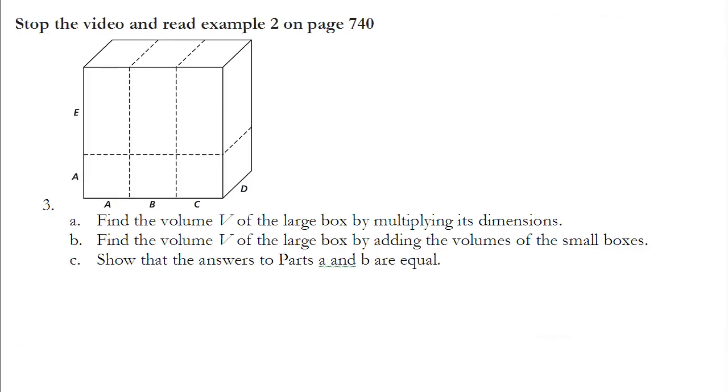This time you may want to stop the video and re-read example number 2 on page 740 before continuing on. So I'm going to do example 3. It kind of relates to that example 2 in your book. It says find the volume of the large box by multiplying its dimensions. We know that the volume of a box is equal to its length times its width times its height. Therefore, I can multiply (a + e) times (a + b + c) times d.